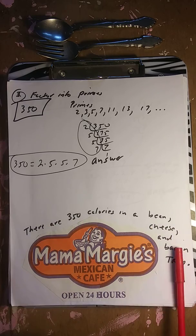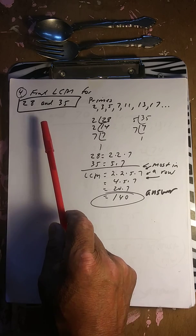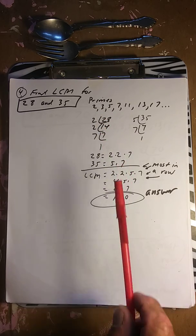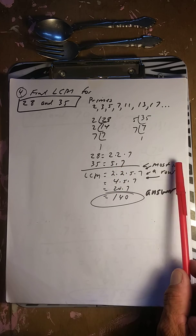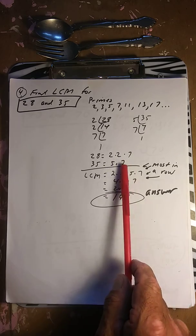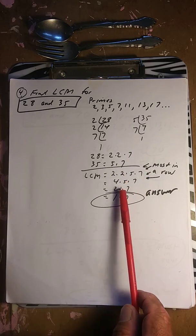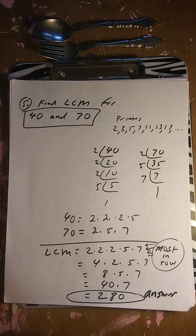Find the LCM of 28 and 35. Divide 28: by 2 gives 14, by 2 gives 7, by 7 gives 1 — so 28 is 2, 2, and 7. Divide 35: by 5 gives 7, by 7 gives 1 — so 35 is 5 times 7. Taking the most of each: 2, 2, 5, and 7 — so 2 times 2 times 5 times 7 equals 140. The LCM is 140.